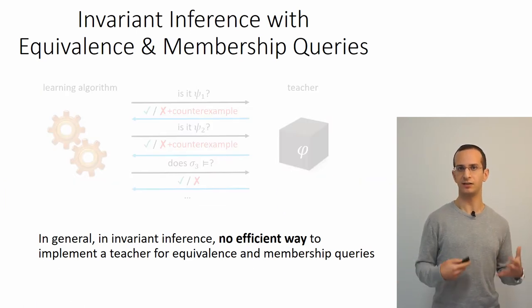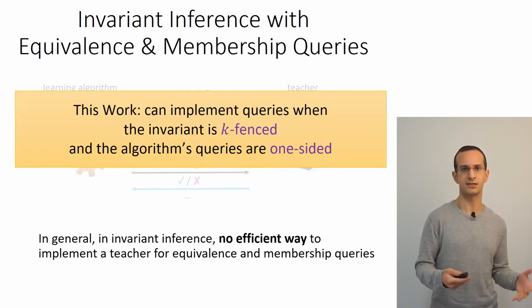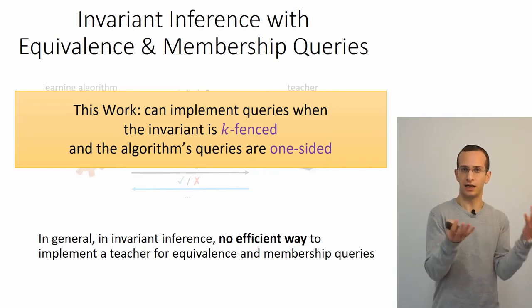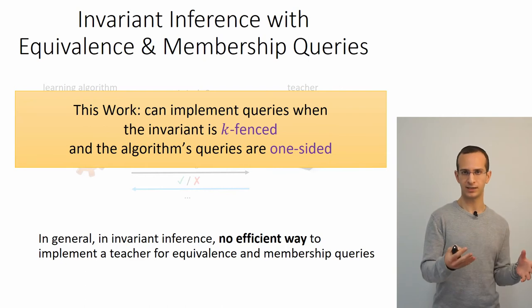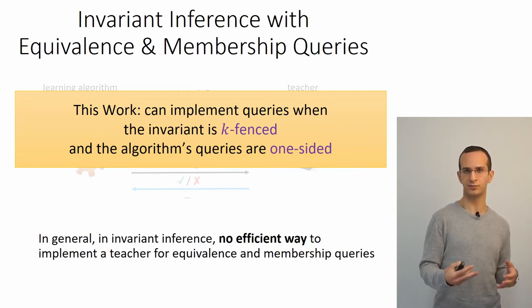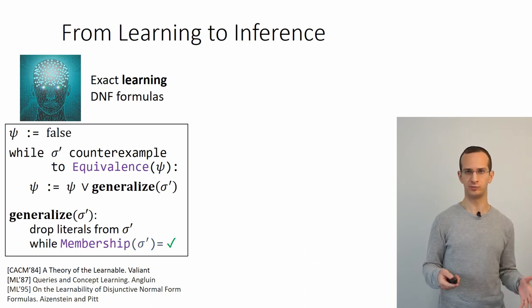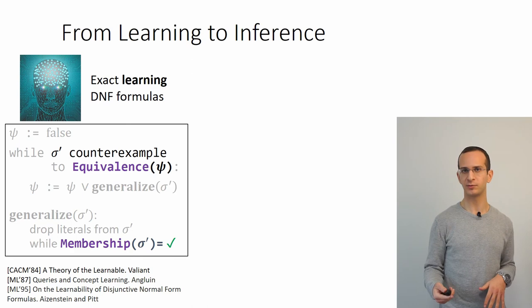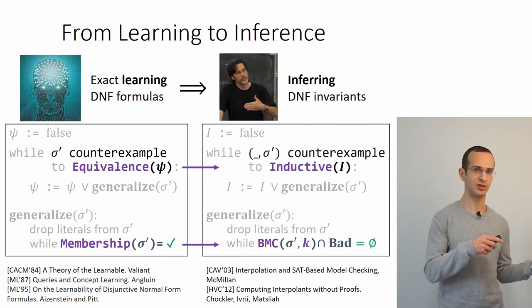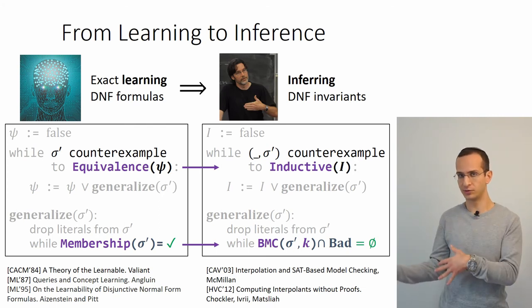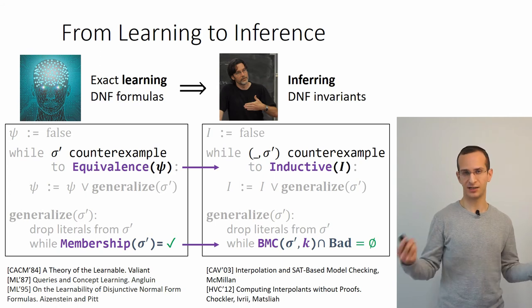In this work, we show that it is possible to implement these queries, and thus implement exact learning algorithms, when the invariant satisfies the fence condition and the algorithm's queries are what we call one-sided. We take an exact learning algorithm—specifically one for disjunctive normal form formulas—and implement its queries for invariant inference: using an inductiveness check to answer equivalence queries and bounded model checking to answer membership queries, yielding an invariant inference algorithm.